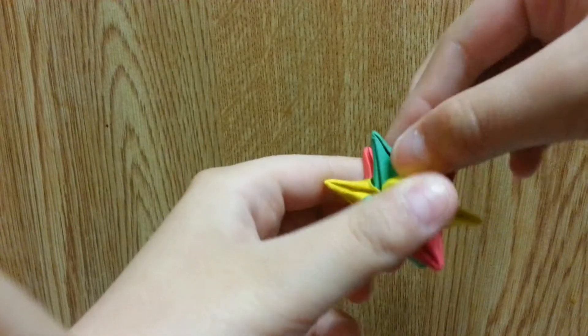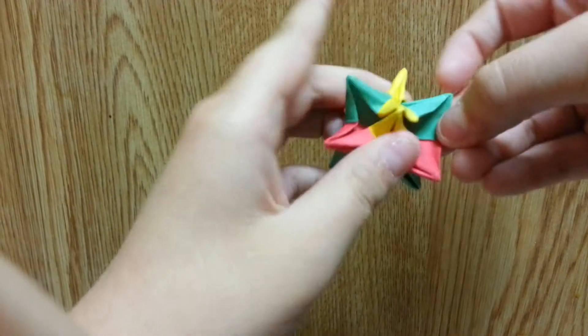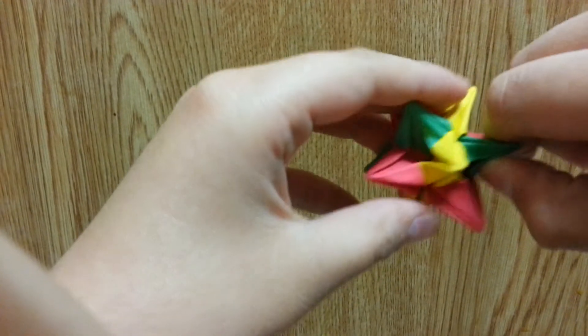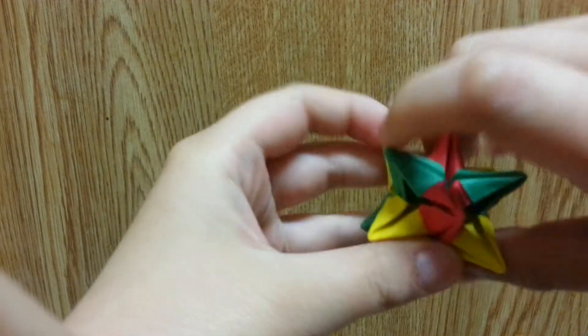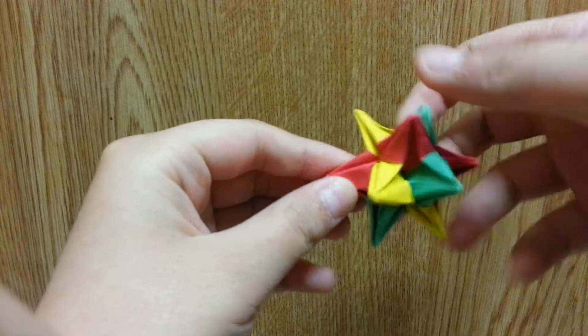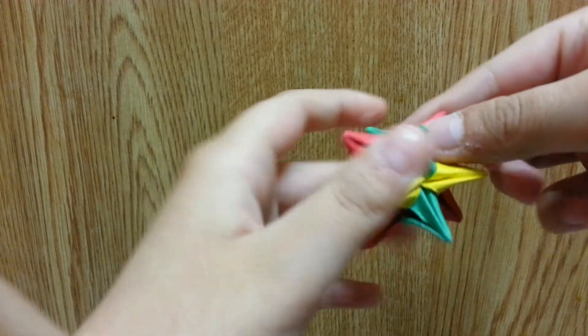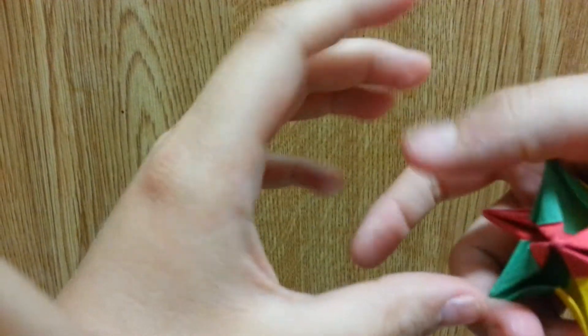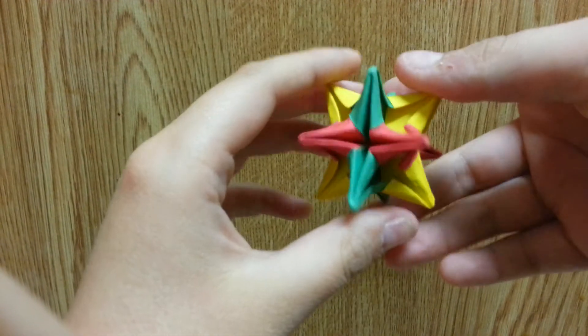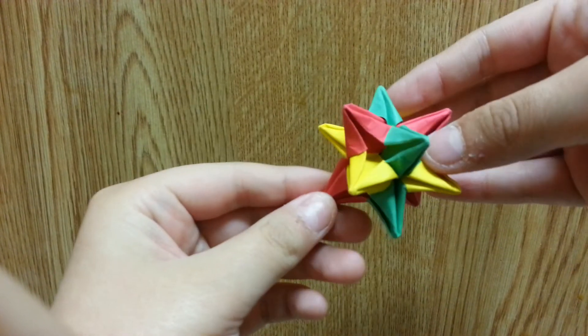It only looks like that because there are all these inside reverse folds to make the points. Before, it was actually just a cube kind of shape, but now it's like this. That's it.